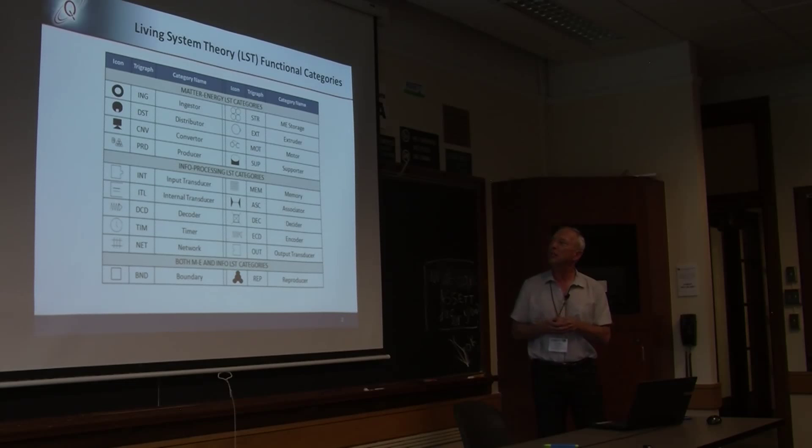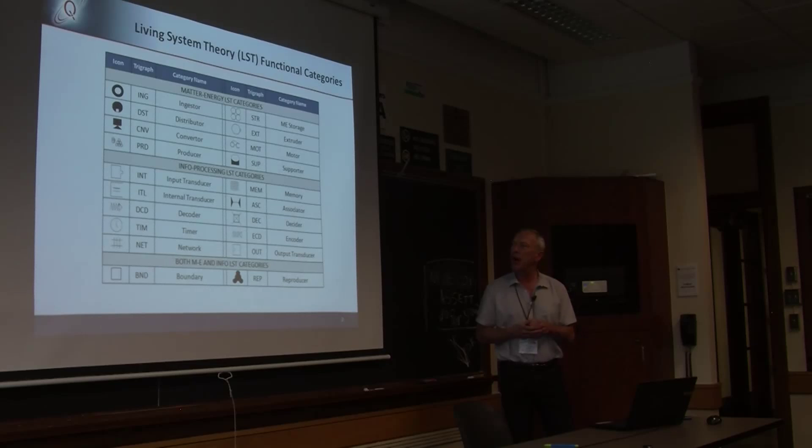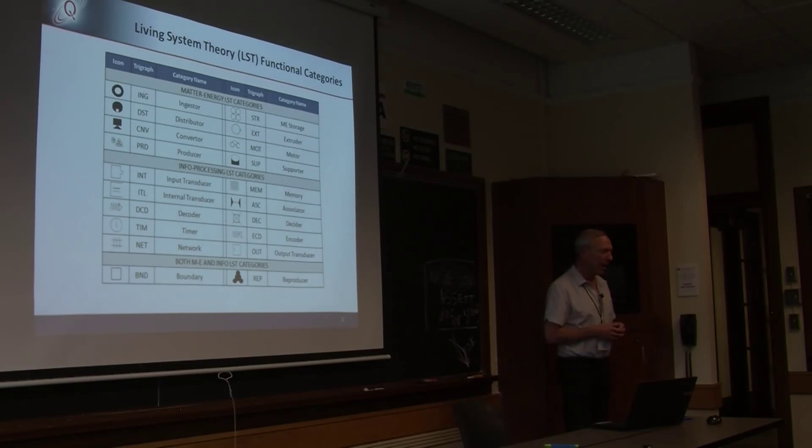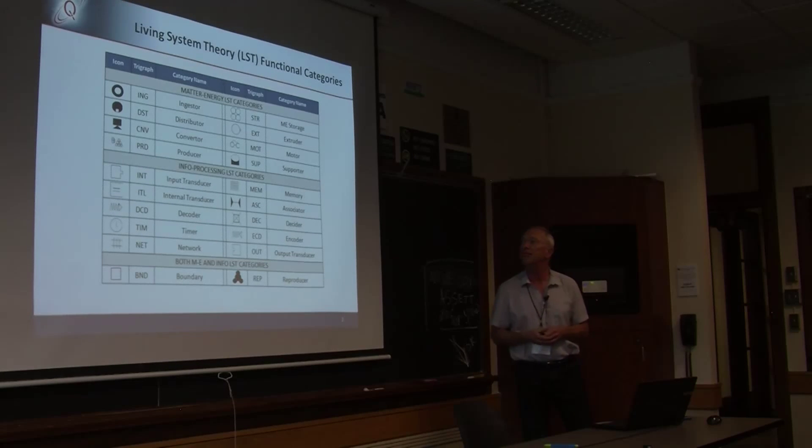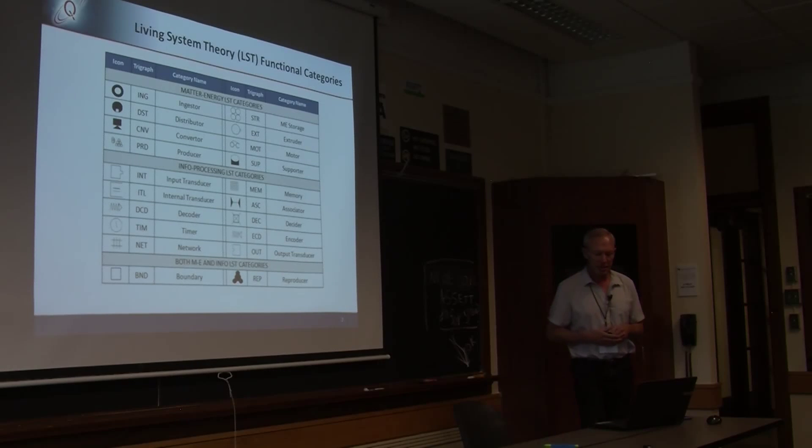So this is an introduction to James Miller's living systems theory functional categories. These are in three different groups: matter-energy living systems theory categories, information processing categories, and categories of functions that process both matter-energy and information. So we have things like ingesting and excreting, mass storage, conversion in the matter-energy. In information processing it's the typical network-based, there's the network, there's inputs and outputs, there's memories and associators.